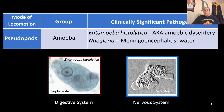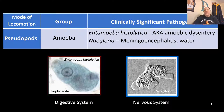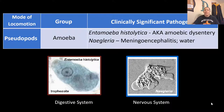Another mode of locomotion is the pseudopod — the false foot — used by amoebas. Amoebas can cause diseases such as amoebic dysentery, caused by Entamoeba histolytica. Another amoeba, Naegleria, causes meningoencephalitis — it transports into the nervous system. Amoebic dysentery affects the digestive system, while Naegleria affects the nervous system; both are transmitted through contaminated water.